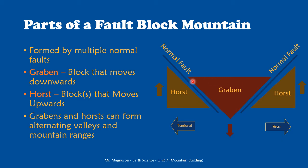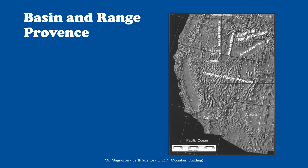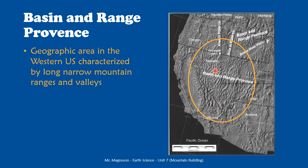A particular area in the United States where we see this is called the Basin and Range Province in the southwestern U.S. California is to the west, and this area — all the really crinkly part of the map with lots of mountains in the middle — is the Basin and Range Province, a geographic area characterized by long, narrow mountain ranges and valleys. The mountains are horsts and the valleys are grabens. This whole big area is a series of fault block mountain ranges.